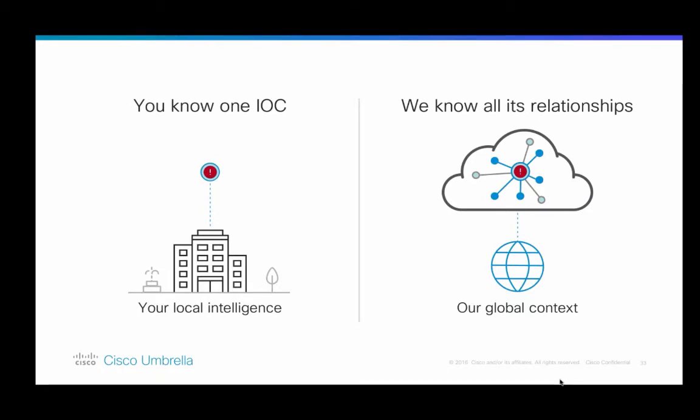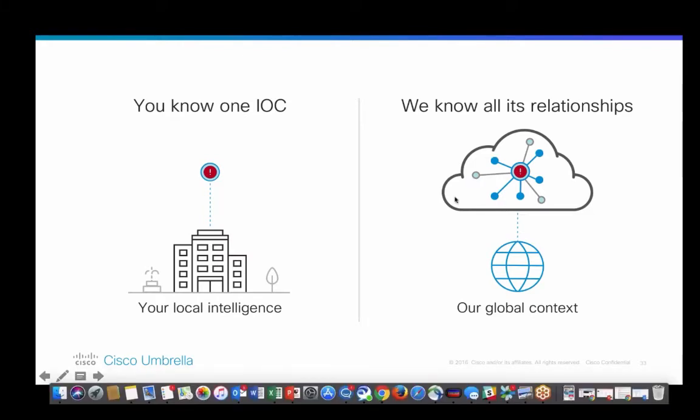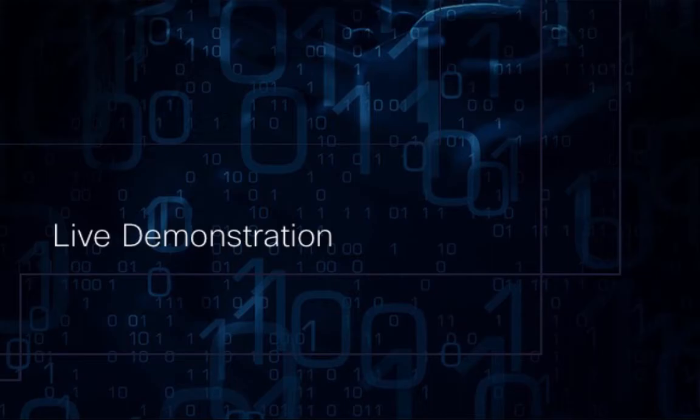To conclude on Investigate: if you know a single IOC based on the local intelligence you're seeing on your network, we're able to use our global context to pivot out and discover all of its relationships. With that, I'll hand it back to Steve, who's going to show us more of Anomaly and how you can use it in a real-world incident.